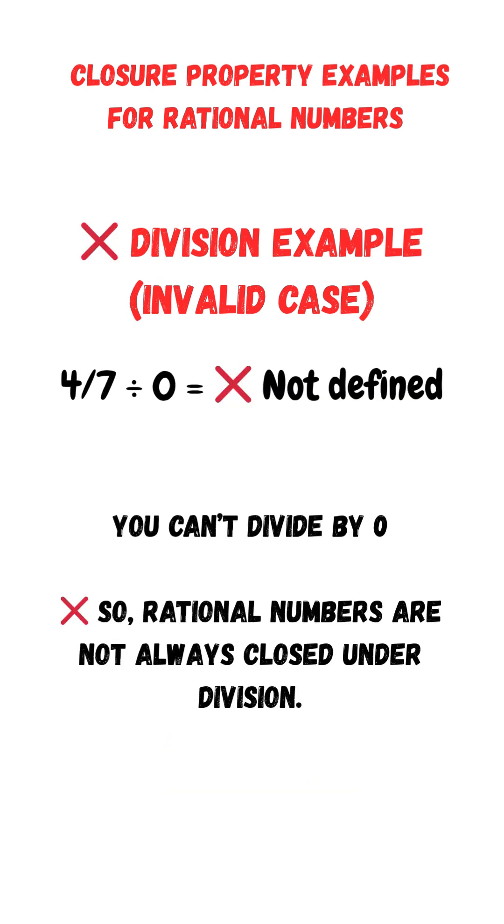Division, invalid case: 4 sevenths divided by 0 is not defined. You can't divide by 0. That breaks the rule.